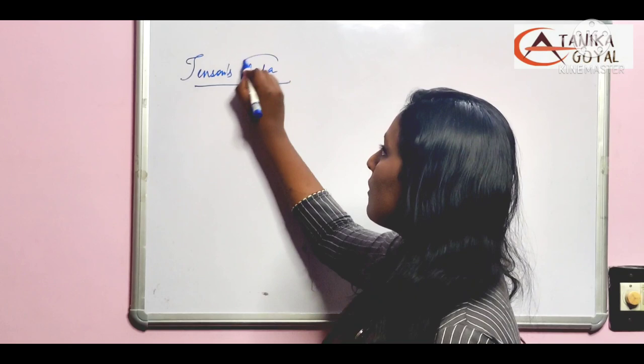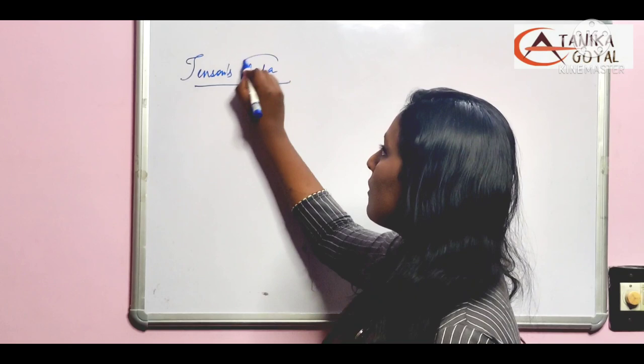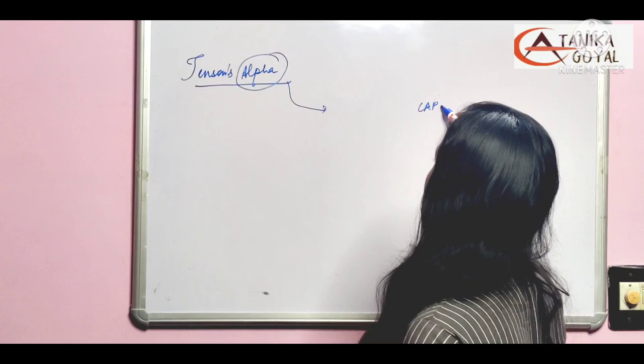Now we have learned two things. Alpha means, I have told you what is alpha. Besides beta, whatever return we generate, that is called alpha. With beta help, we derive another ratio that is from CAPM method.